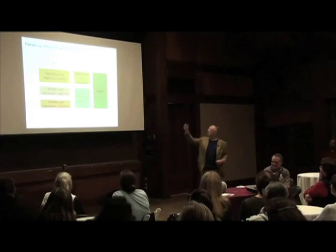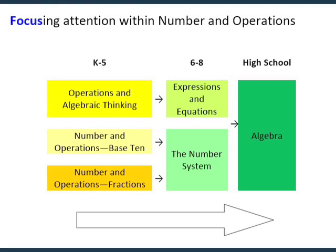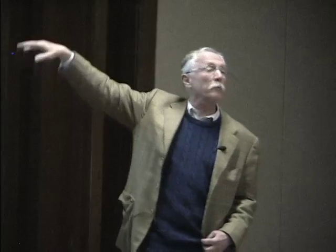So what we did is break number up in elementary into operations and algebraic thinking, number and operation base 10, and fractions. Each one is coherent — they're related, but they have their own coherence.